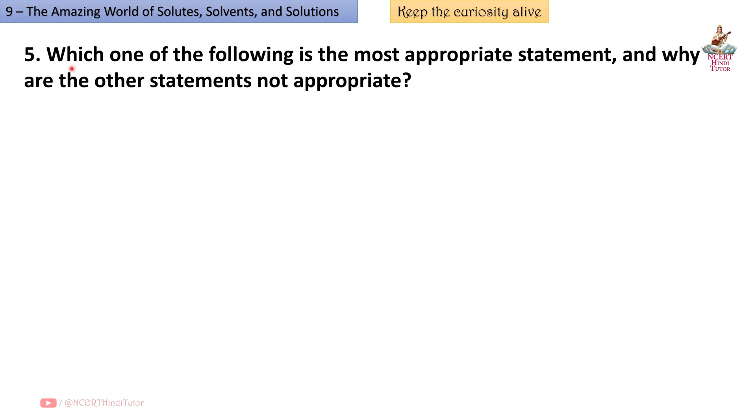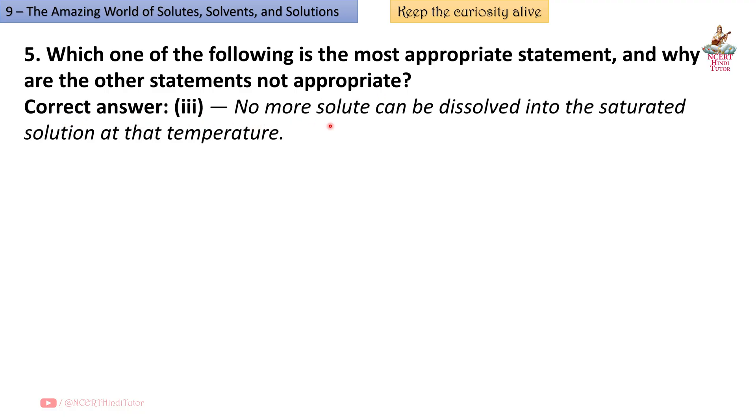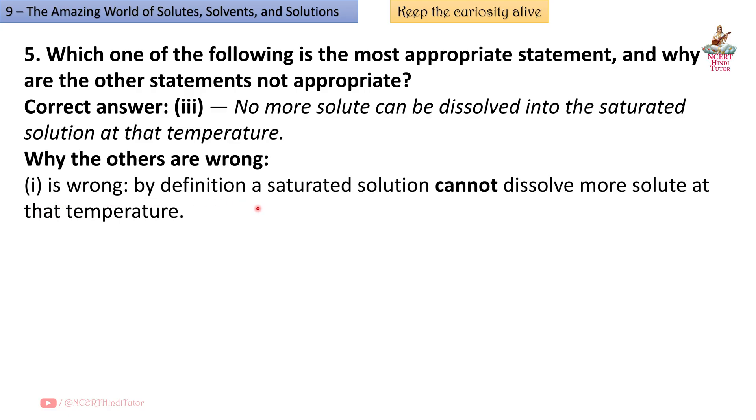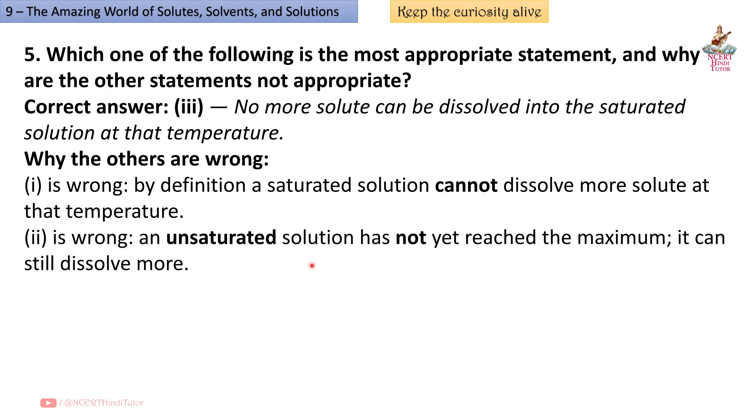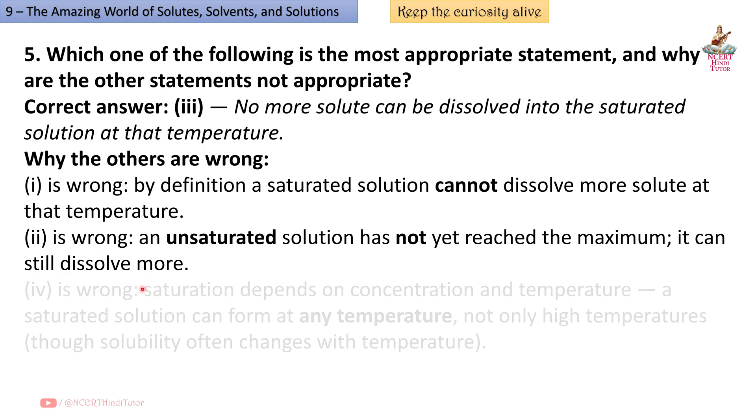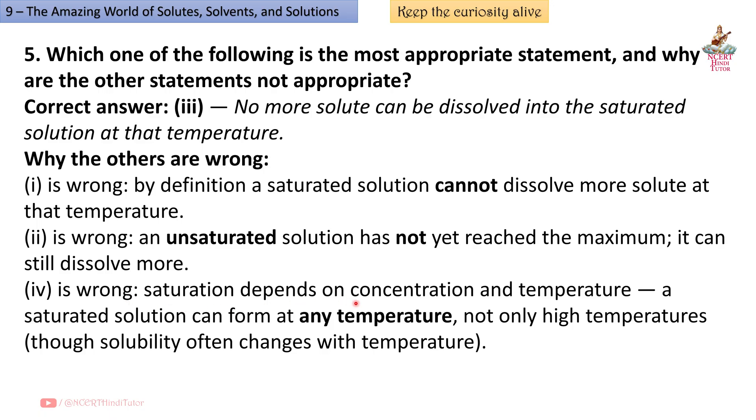Question 5: Which one of the following is the most appropriate statement and why are the other statements not appropriate? Question 6: Correct answer Third: No more solute can be dissolved into the saturated solution at that temperature. Why the others are wrong? First is wrong: By definition a saturated solution cannot dissolve more solute at that temperature. Second is wrong: An unsaturated solution has not yet reached the maximum. It can still dissolve more. Fourth is wrong: Saturation depends on concentration and temperature. A saturated solution can form at any temperature, not only high temperatures, though solubility often changes with temperature.